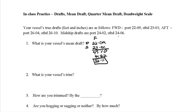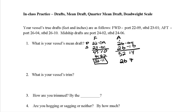Now for the after drafts. The two readings are 26.04 and 26.10. Adding those gives 52.14 — that's an even number so I'll leave it. Half of 52 is 26, and half of 14 is 7. So my average aft draft is 26'07".